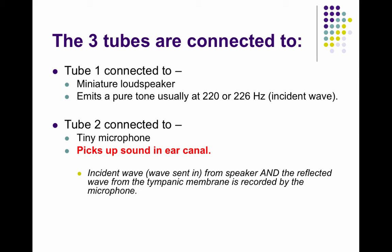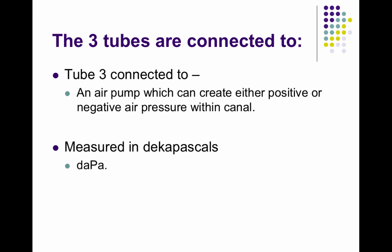The first tube is connected to a miniature loudspeaker that sends out a pure tone around 220 or 226 hertz. The second tube is a tiny microphone that picks up the sound reflected in the ear canal, and the third tube is an air pump that creates either positive or negative pressure.